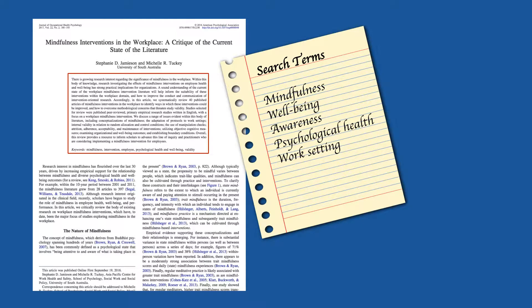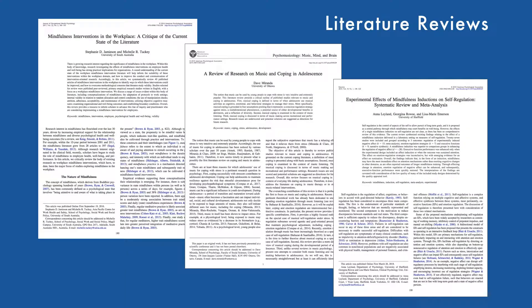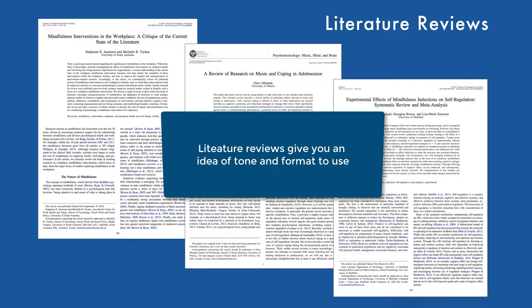The abstract, keywords, and index terms from a review are particularly useful for this. In addition, many literature reviews will provide a robust list of references that you might want to access and incorporate into your own project. Finally, if you're required to write a literature review yourself, a published literature review will give you an idea of the tone and format that you should use.